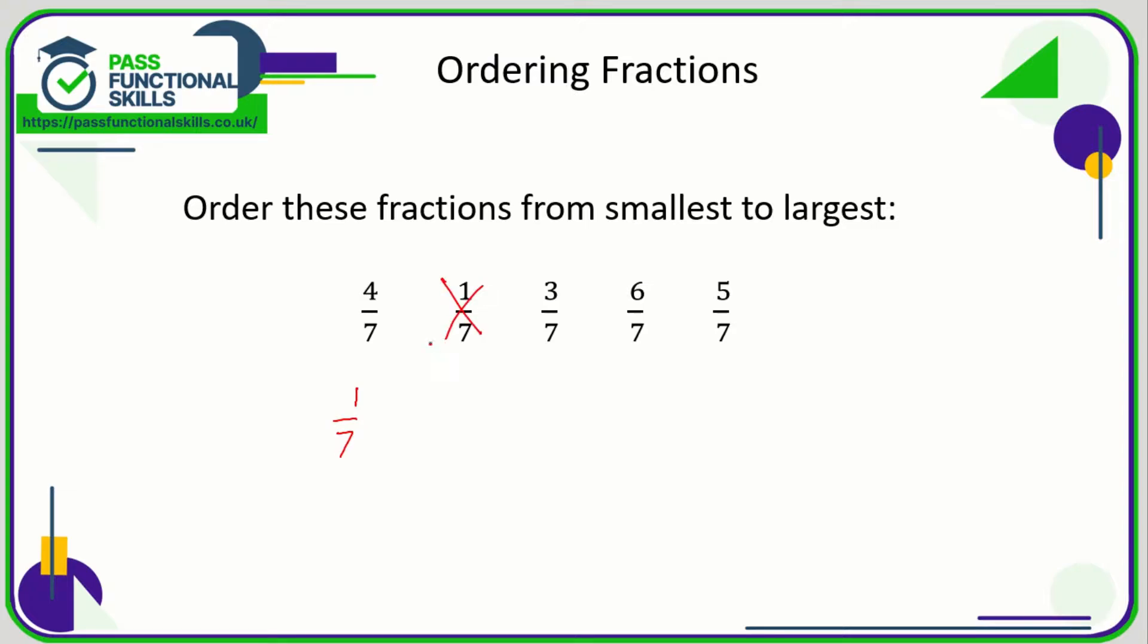The next smallest number is 3, so 3/7 is next smallest, followed by 4/7, followed by 5/7. Therefore, 6/7 is the largest. However, when the numbers on the bottom are different, it can be a bit harder. At least all the numbers on the top are the same.